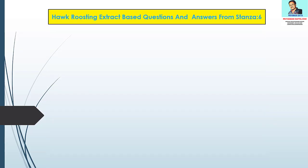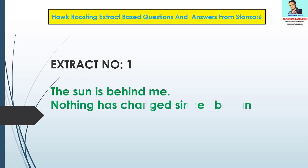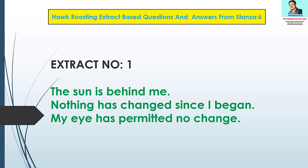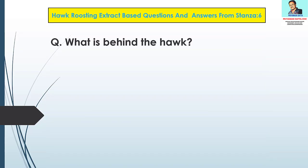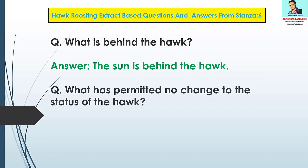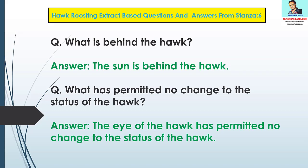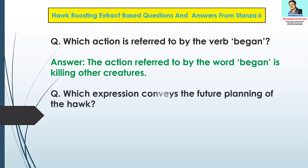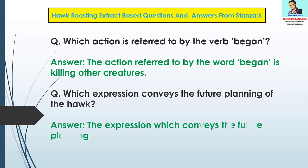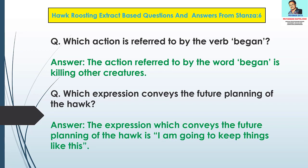Hawk Roosting extract based questions and answers from Stanza 6. Extract number one: 'The sun is behind me. Nothing has changed since I began. My eye has permitted no change. I am going to keep things like this.' Question 1: What is behind the hawk? Answer: The sun is behind the hawk. Question 2: What has permitted no change to the status of the hawk? Answer: The eye of the hawk has permitted no change to the status of the hawk. Question 3: Which action is referred to by the verb began? Answer: The action referred to by the word began is killing other creatures. Question 4: Which expression conveys the future planning of the hawk? Answer: The expression which conveys the future planning of the hawk is 'I am going to keep things like this.'